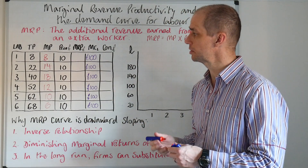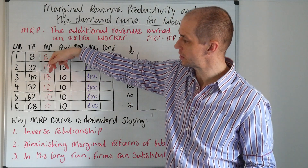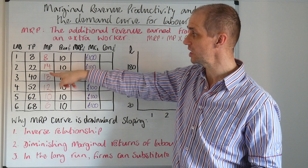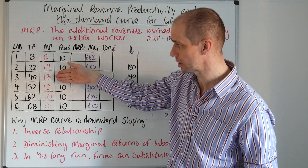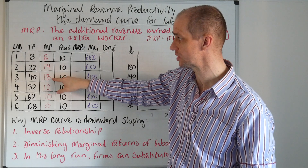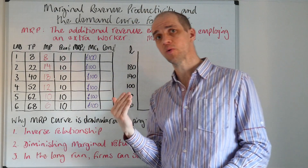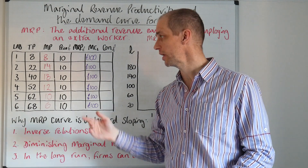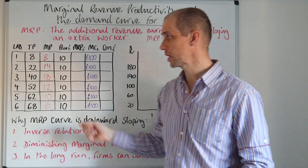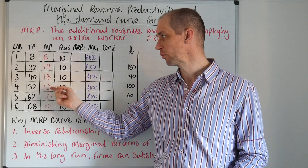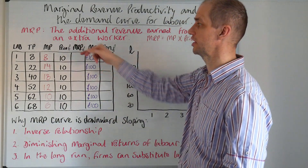There are some important things to be aware of here. As we reach the third worker, we can see diminishing marginal returns taking place — i.e. the additional output provided by each extra worker starts falling after the third worker is employed. As we move on to the fourth worker, it's gone down to 12, then 10, and then 6. So that's diminishing marginal returns in action.